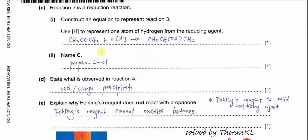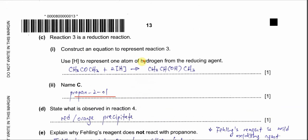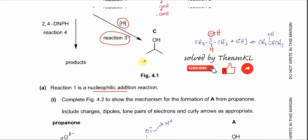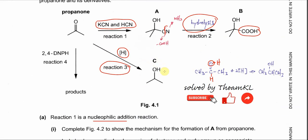Part two: name compound C. The name is propan-2-ol. Counting the carbons: first, second, third carbon — the OH is bonded to the second carbon, so it is propan-2-ol.